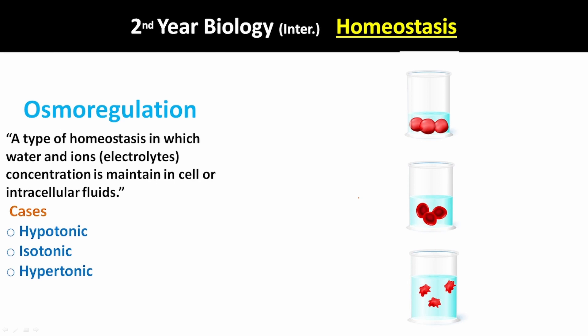Next, let's see osmoregulation. Osmoregulation is a type of homeostasis in which water and ions — electrolytes — concentration is maintained in cells or intracellular fluids. Intracellular fluids are the fluids present inside the cell. Basically, osmoregulation is the maintenance of water and electrolytes or ions in the cell, intracellular fluids, or your blood.